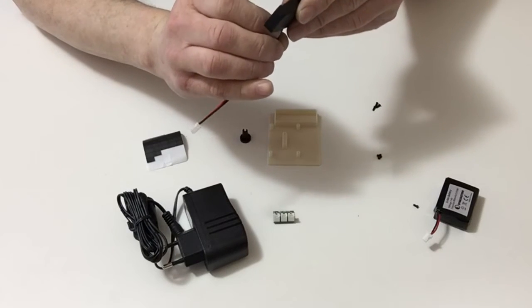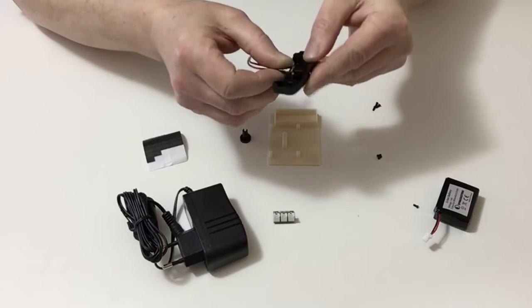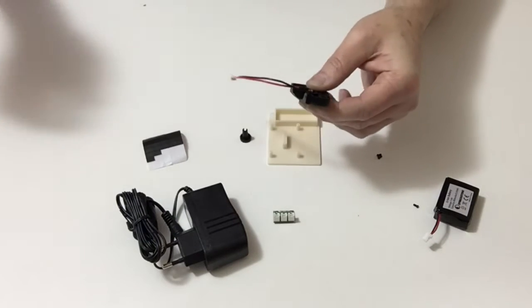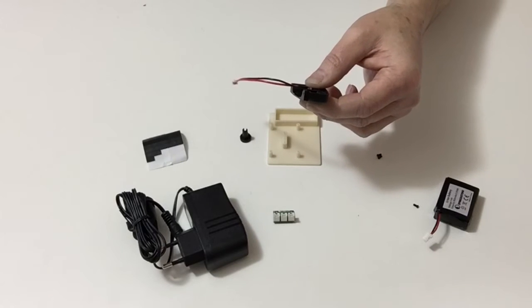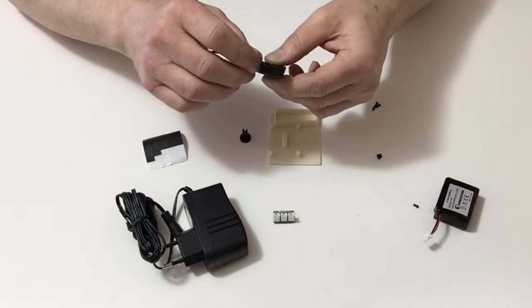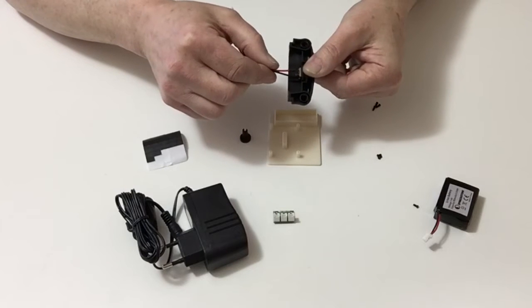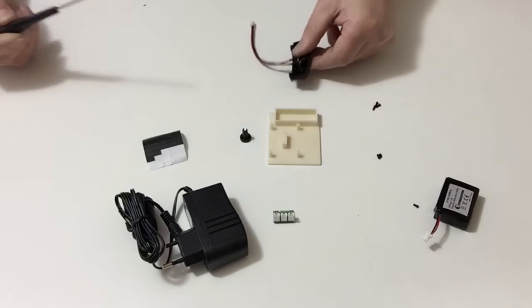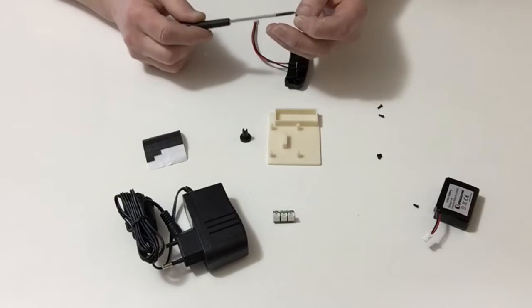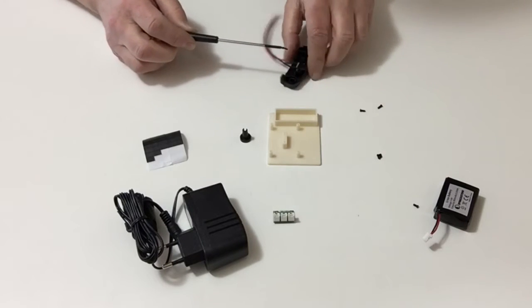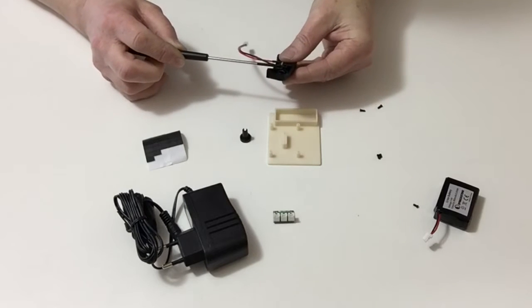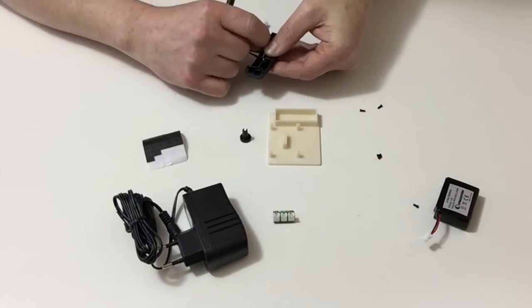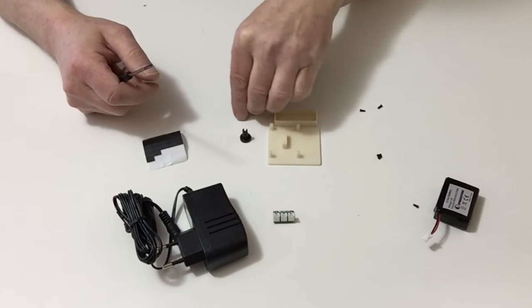We're going to be connecting the power cord to the power distribution board. Once that's in position, use a couple of the 5mm pan head screws to secure all that into place. Take a screwdriver and carefully screw those down into position.